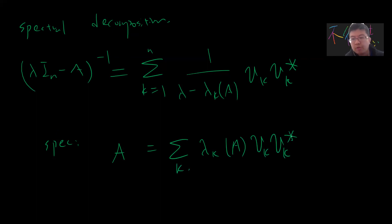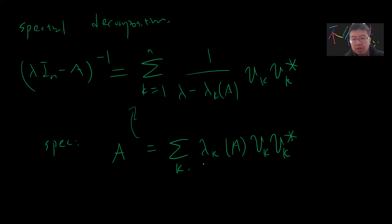This should be viewed as a dagger — it's the same as dagger or conjugate star. So you can start from the spectral decomposition of A and take (lambda_i*I minus A) inverse. Because lambda does not equal any lambda_k, these will transform accordingly.